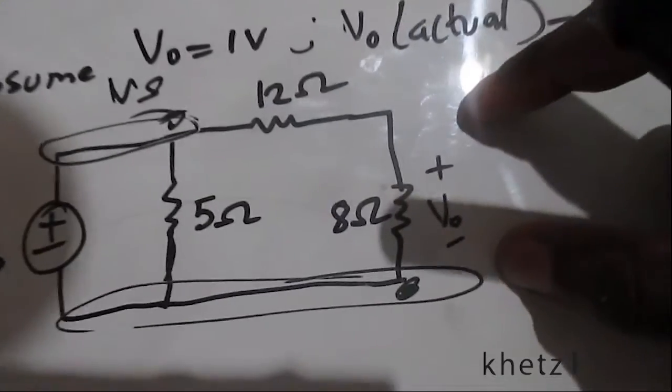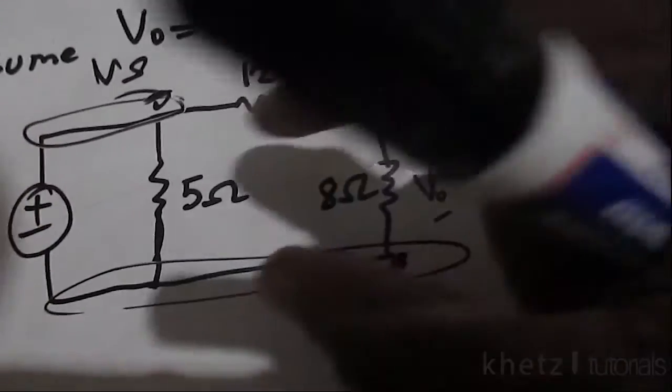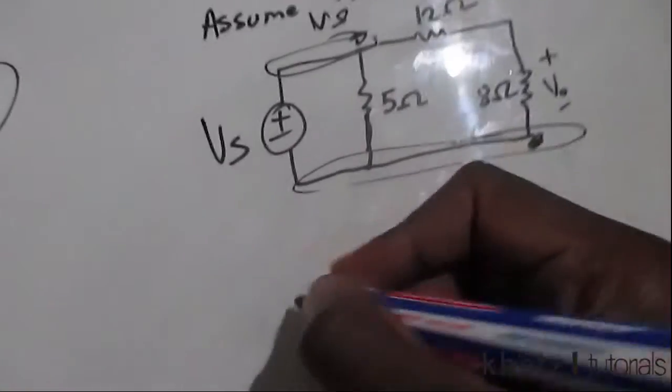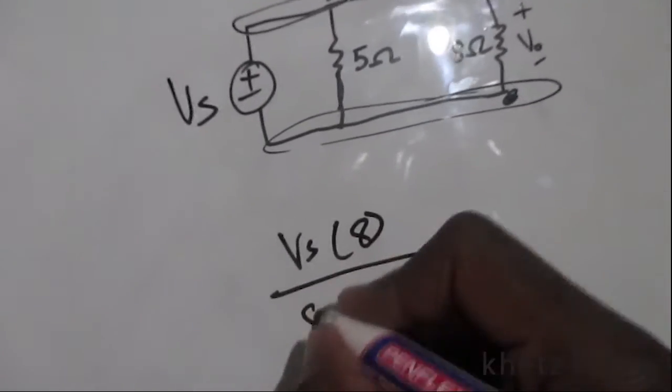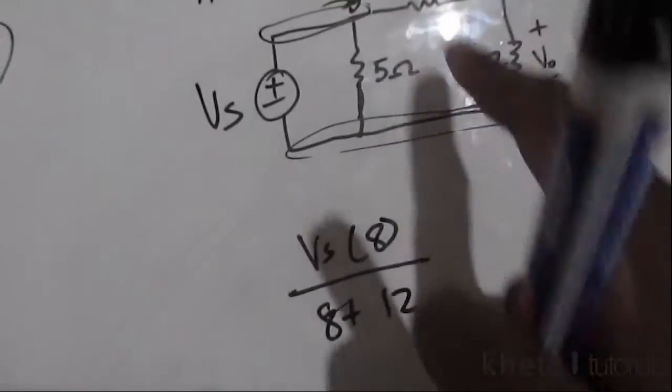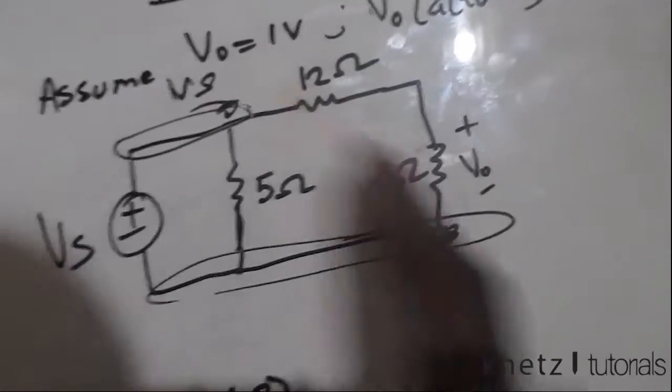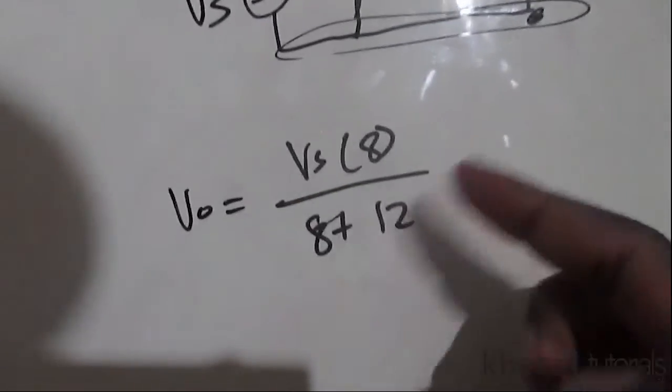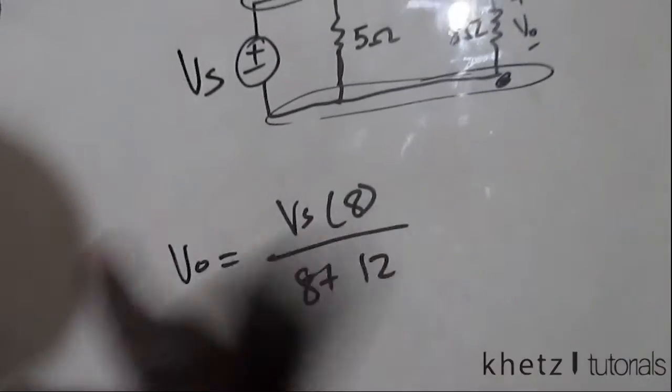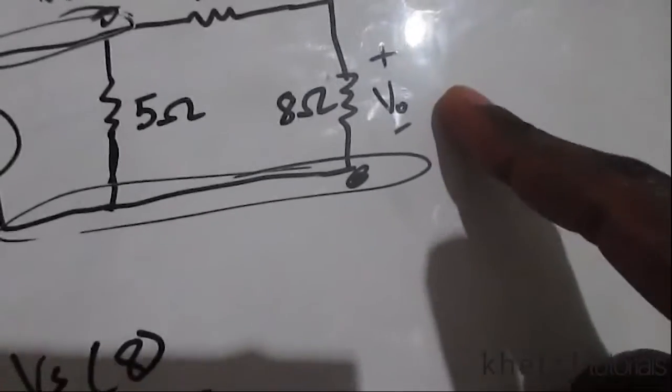To find the vo, which is specifically the voltage across the 8 ohm resistor, we're going to say vs multiplied by 8, divided by 8 plus 12, to divide the voltage between these two. This is to find the voltage vo which is across the 8. This is basically how you'd find the voltage vo.